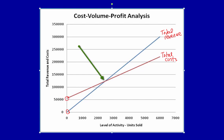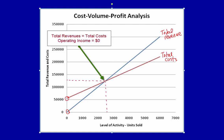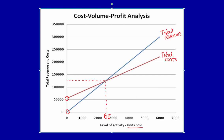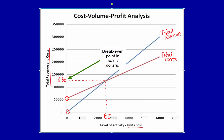What does it mean when the lines cross? It means that total revenues are equal to total costs, and that means operating income is equal to zero. This is called the break-even point. It appears to be somewhere between 2,000 and 3,000 units. The break-even point on the x-axis is the number of units needed to earn zero operating income, and on the y-axis it represents the break-even point in sales dollars.